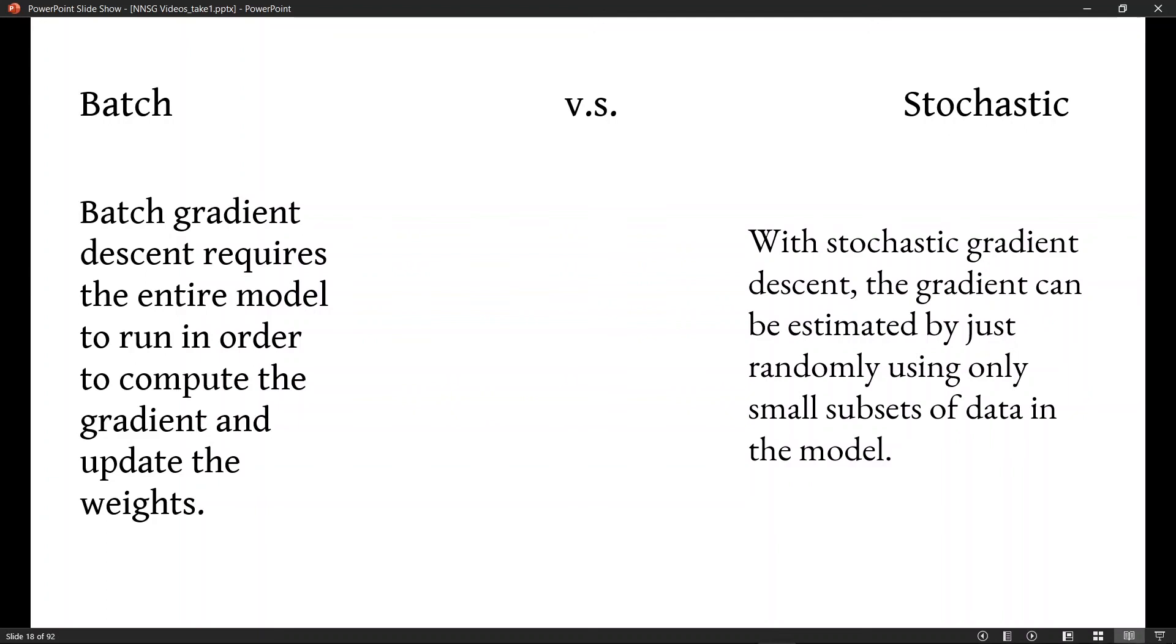What I would like to talk about is batch gradient descent versus stochastic gradient descent. Batch gradient descent requires the entire model to run. So every single node or neuron has to be in use in order to compute the final guess. And then you use that guess to calculate the error and find the loss function, define the derivative or the gradients of the loss function in order to find the adjustment values to tweak your model.